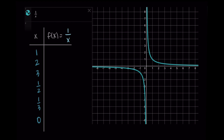For input 1, we get 1 over 1, which is 1 — so the point (1, 1). For input 2, we get 1 over 2, which is one half — the point (2, one half). Similarly, 3 gets mapped to 1 third, giving point (3, one third). As we continue to get larger values, we're getting 1 over that value each time.